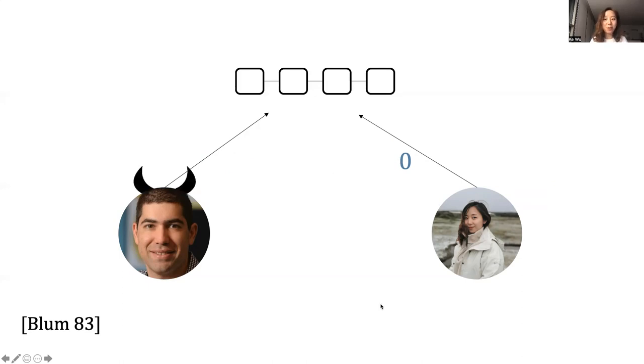However, Ilang really wants to go to the beautiful beach in Santa Barbara. So after I post my bit on the blockchain, he knows he's gonna lose the game if he opens his bit. What if he refused to open his commitments?